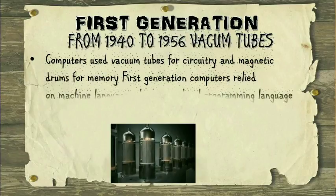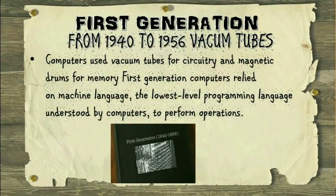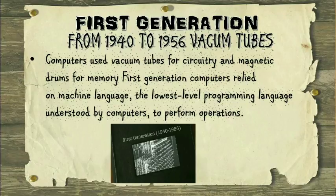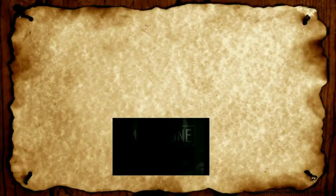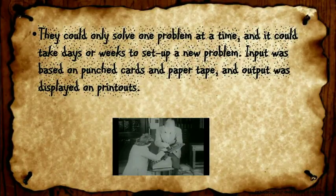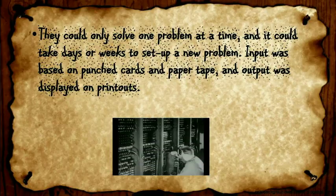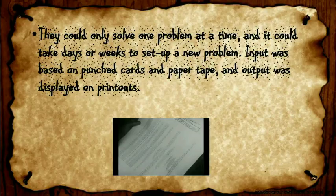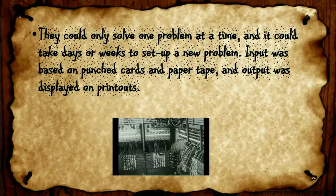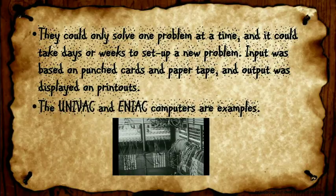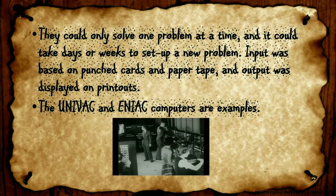The first generation computers used vacuum tubes for circuitry and magnetic drums for memory. They relied on machine language, the lowest level programming language understood by computers to perform operations. They could only solve one problem at a time and it could take days or weeks to set up a new problem. Input was based on punch cards and paper tape, and output was displayed on printers. The UNIVAC and ENIAC computers are examples.